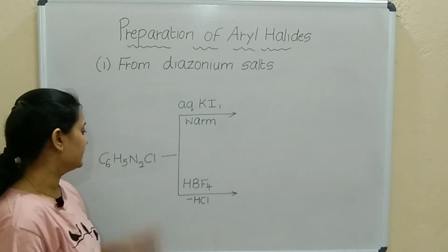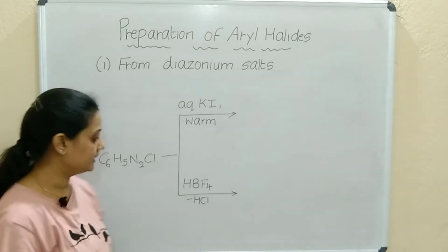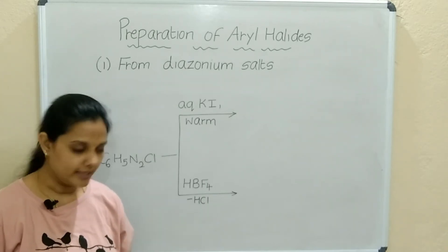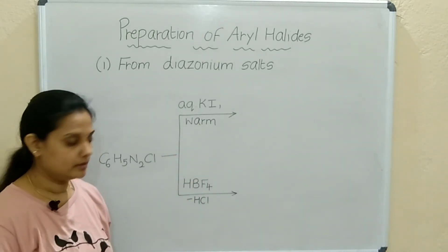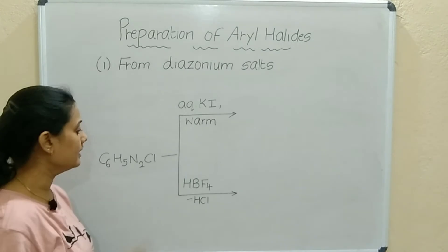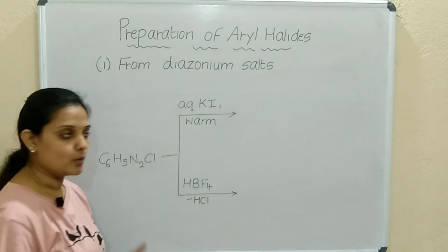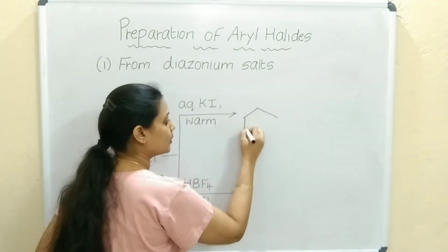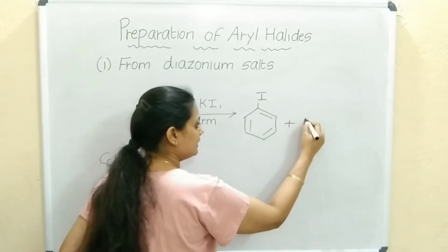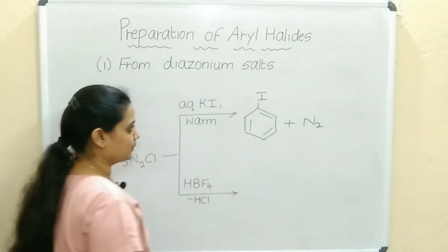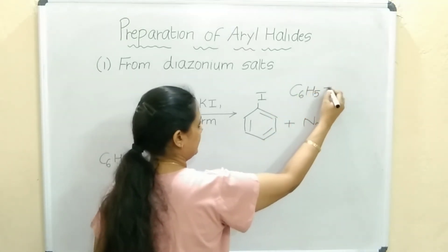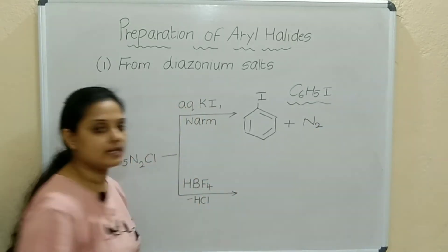The next reaction: benzene diazonium salt is treated with aqueous potassium iodide (KI) and the solution is warmed. The product is iodobenzene C6H5I — iodine attached to the benzene ring — and the byproduct is N2.